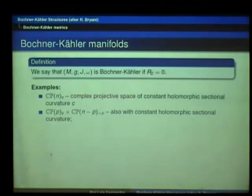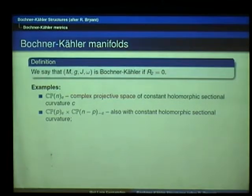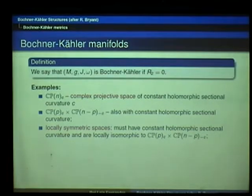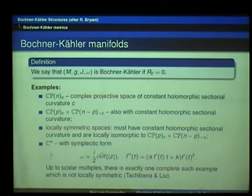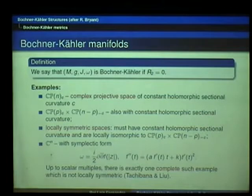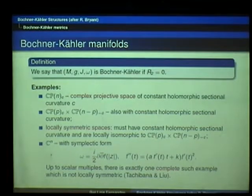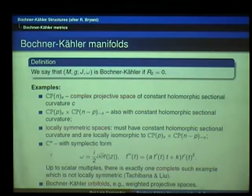We have complex projective space with constant holomorphic sectional curvature. We can take a product of two of them, provided we pick the sectional curvatures appropriately. If we take a locally symmetric space and ask if it is Bochner-Kähler, the only example is that, or open sets there — so they are locally isomorphic to that. If we take Cⁿ and write the potential and look for the condition on the potential for which the metric becomes Bochner-Kähler, we get an ODE for some constants A and K. Up to scalar multiples, there is exactly one complete such example. And then there are orbifold solutions, for example weighted projective spaces, which will turn out to be important later.